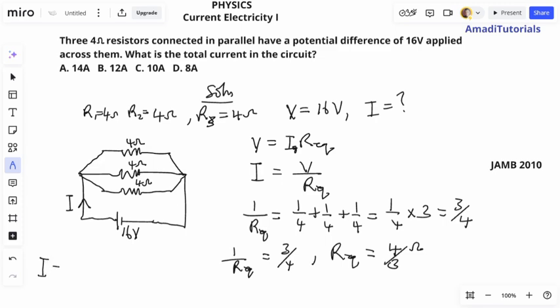So current will be V over equivalent resistance. That will be 12 divided by four over three, which is the same thing as 12 times three divided by four.